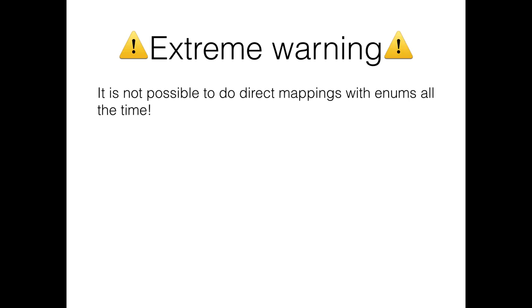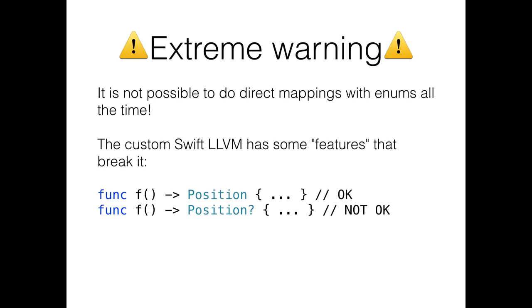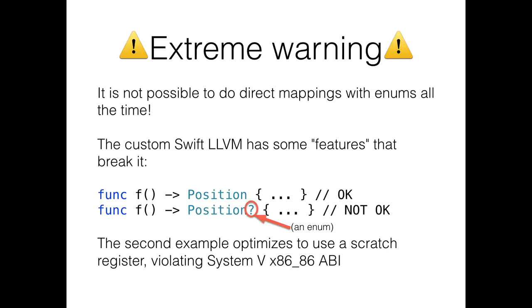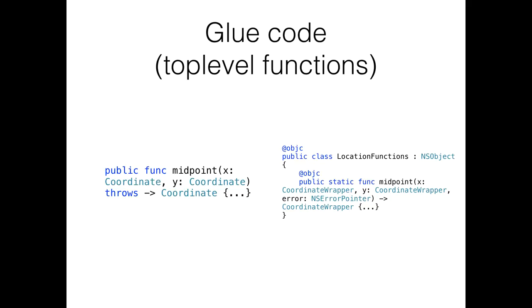You can't direct map enums all the time because custom Swift LLVM has some features that they say are good. Here's an example of a function that you can direct map. It returns a position. That little enum that I just showed that has three different types, three different associated values. If we turn it into an optional, it is no longer okay. Remember, optionals are just enumerations. Syntax sugar. This is really a type of optional position. So, what the compiler does is the second example optimizes to use a scratch register which violates system V calling conventions, which means that you cannot directly map the return value to a C type, and that is bad. So, you actually have to inspect the results of the compiler to figure out whether or not you can even do these things.